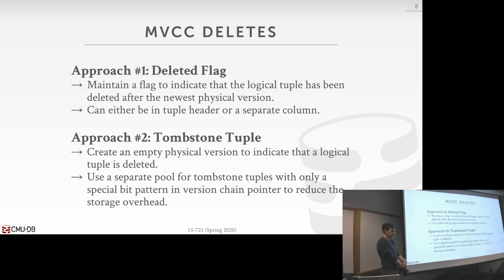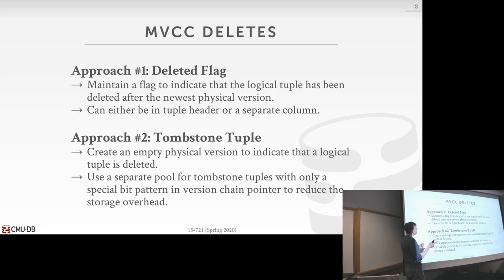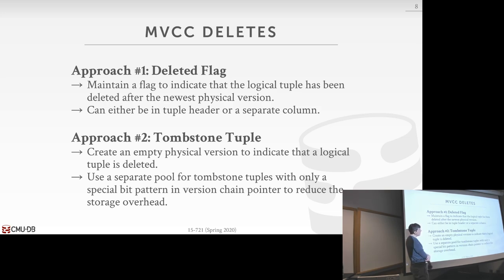A student asked: why not just store a flag in the last non-deleted version saying the next version is deleted? You need to know the timestamp of deletion. But if you already know the end timestamp... you could maybe encode a delete in a special bit pattern of the end timestamp. The issue is: if my transaction that deleted a tuple aborts, I need to go back and remove that flag. And if I modify the previous tuple's pointer, I still have to update it on abort.